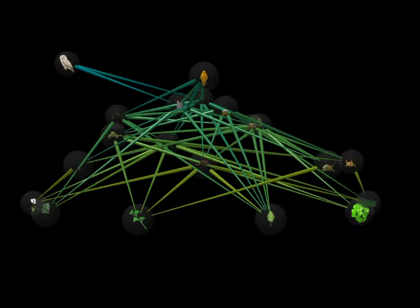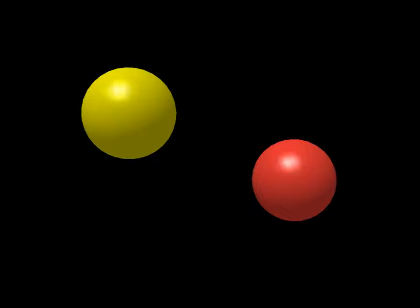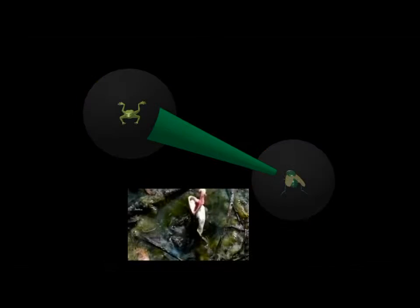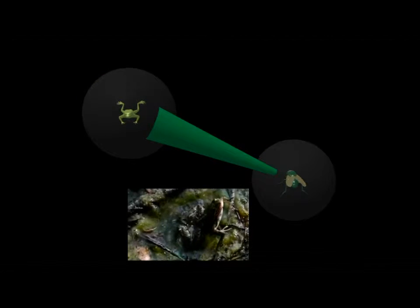We illustrate these networks by using spheres to represent the species found in the food web and by using long skinny cones to represent the feeding relationships between these species.